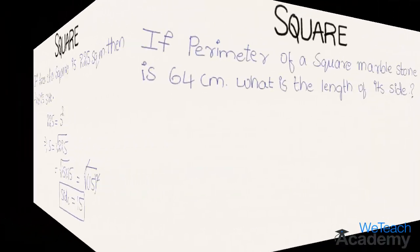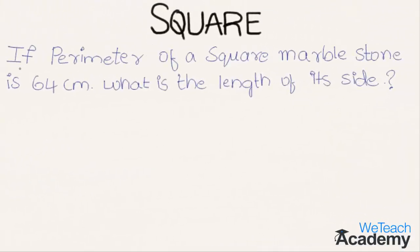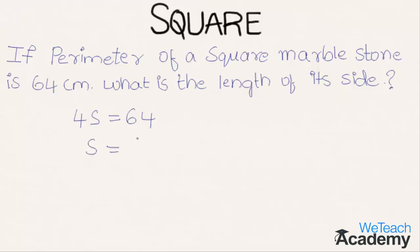Now let us discuss another example. If the perimeter of a square marble stone is 64 centimeters, what is the length of its side? Perimeter = 4s = 64. Transferring 4 to the right-hand side gives s = 64 ÷ 4 = 16 centimeters.